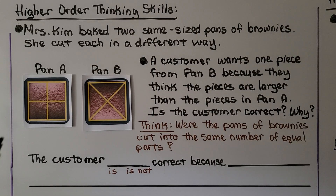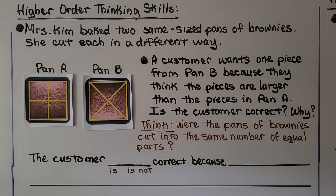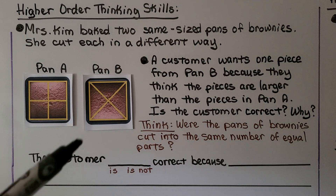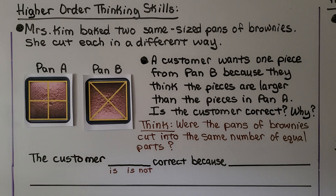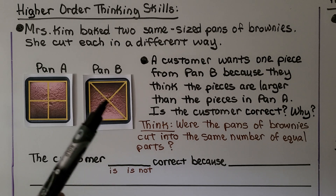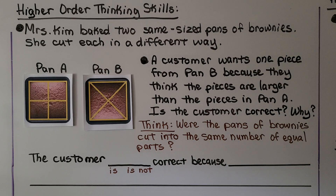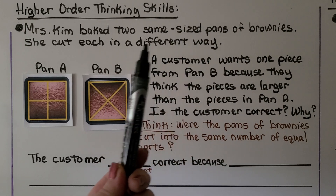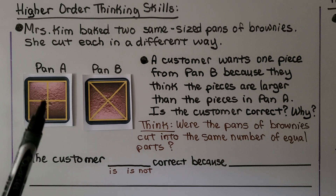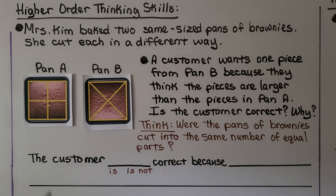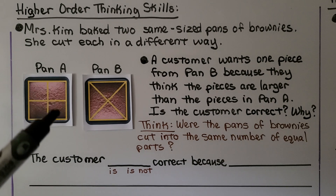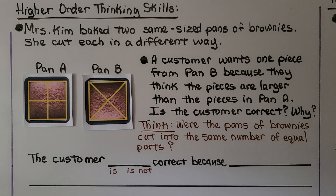Mrs. Kim baked two same-sized pans of brownies and cut each in a different way. She cut one pan vertically and then horizontally. The other she made a diagonal cut and then another diagonal cut. A customer wants one piece from pan B because they think the pieces are larger than the pieces in pan A. Were the pans of brownies cut into the same number of equal parts? Both pans are the same size, so before they were cut it was the same one big pan. This pan is in four equal parts and this one is also in four equal parts, and the pans are the same size.